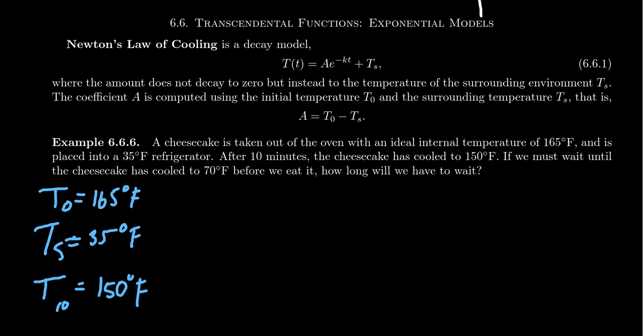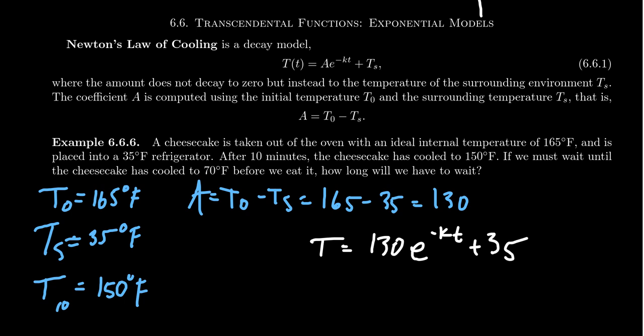So using this information, we can build our model. So A is supposed to be the difference of T naught and TS. So we're going to take 165 and subtract from it 35 degrees. That's going to give us 130 as our A value right there. So our model will look something like the temperature T is going to equal A, which is 130 times E to negative KT plus 35. So we don't know what K is yet. That's what we have to solve for in this situation. That's where the observation of what happened at 10 minutes is significant for us.